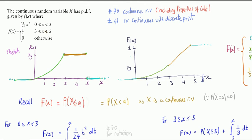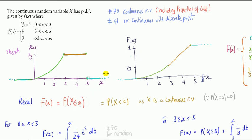Now let's look at the CDF itself. It comes in four pieces: the blue matches the blue, the green matches the green. The curve in the PDF corresponds to a curved piece in the CDF; the horizontal line in the PDF corresponds to a straight line in the CDF. A lot of questions students have come from not realizing what they can use this graph for.